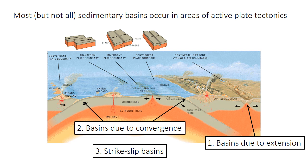Basins can form in stable continental interiors, but the vast majority are located near plate boundaries or in areas of active plate tectonics. Basins can form due to extension — rifting or spreading of the crust — due to convergence where two plates collide, like in subduction zones or continent collision zones, or due to strike-slip faulting where the two plates are moving laterally beside each other.